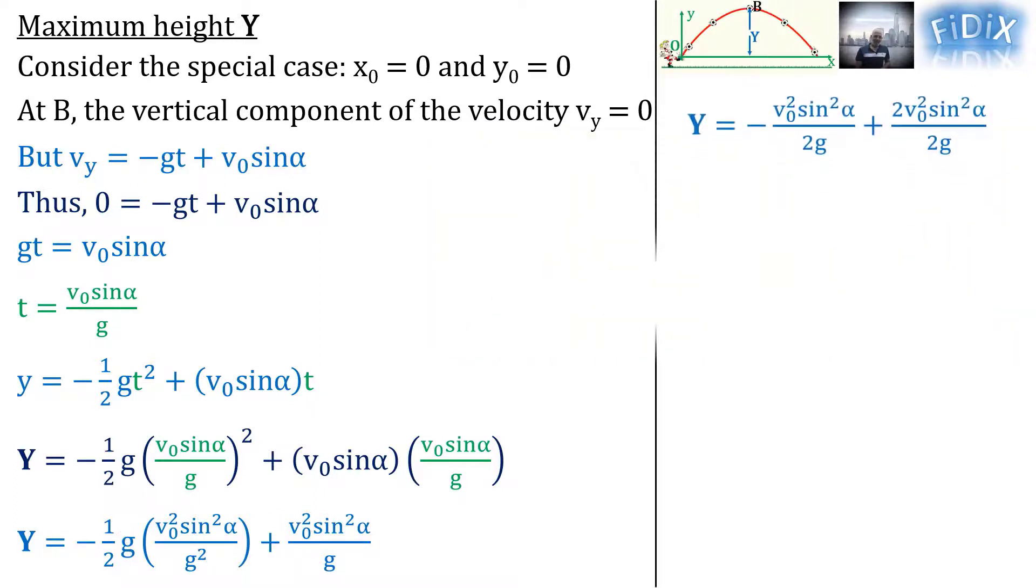The work leads to the formula of the maximum height: Y equals V₀² multiplied by sin² α over 2g. Note that based on this formula, the maximum height has many values depending on the launch angle α, but the greatest or maximum among all these values is denoted Yₘₐₓ and is reached when sin² α is equal to one.